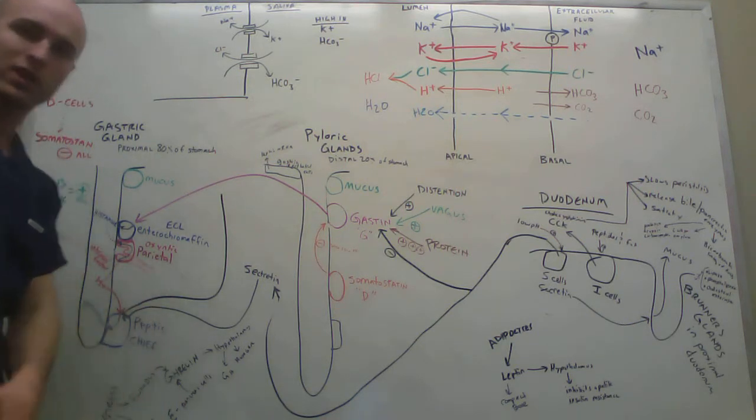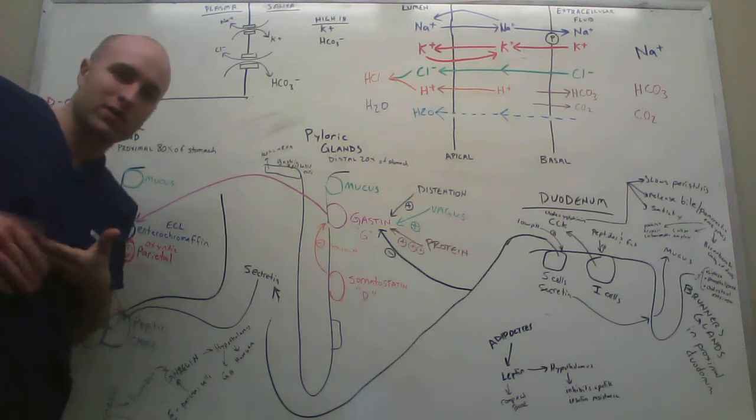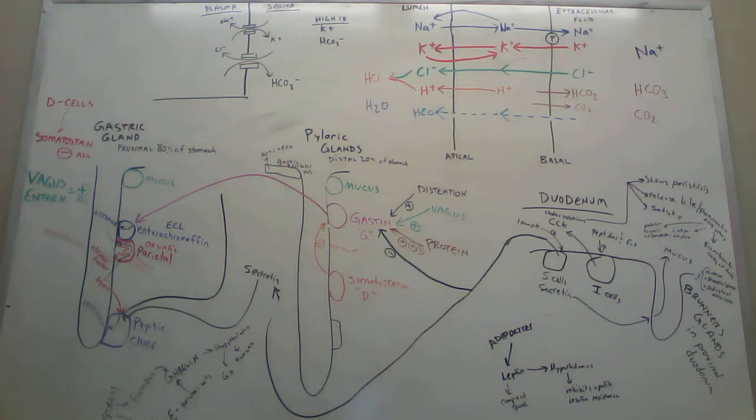Now let's go on to what's exactly happening in your stomach. Starting off in the proximal 80% of your stomach, meaning the upper part, you have a lot of different kinds of cells. You have these gastric glands, and towards the top of these gastric glands are mucus cells that secrete mucus.